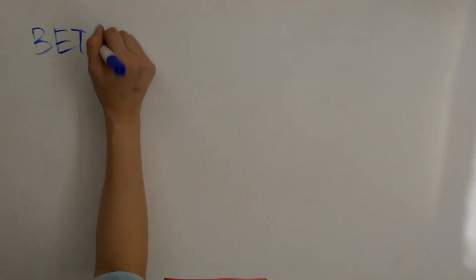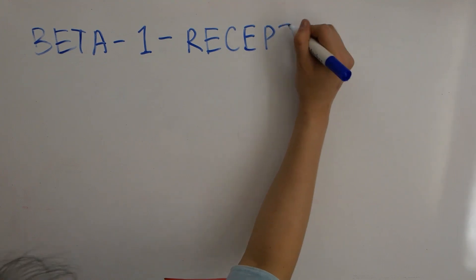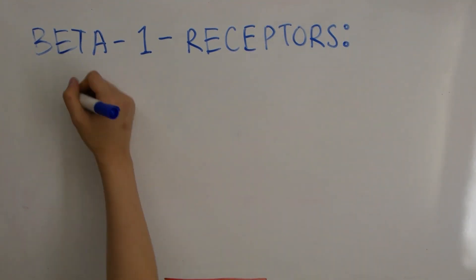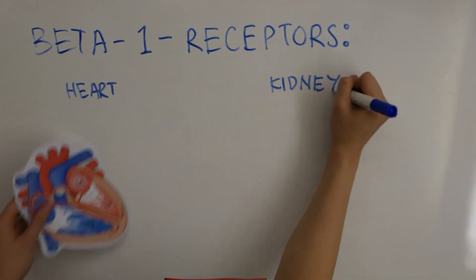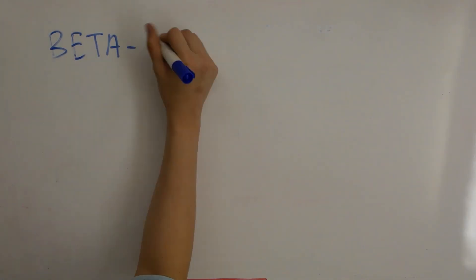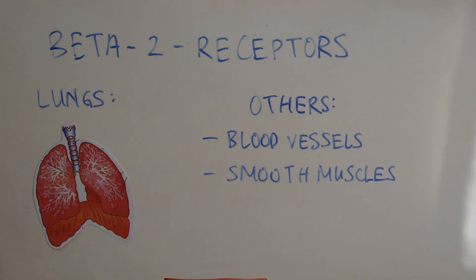acts on beta adrenoceptors by blocking sympathetic nerve stimulation caused by epinephrine, norepinephrine, and dopamine. There are two main types of beta receptors: beta 1 receptors are mainly in the heart and kidneys, and beta 2 receptors in the lungs, blood vessels, and smooth muscles of organs. Beta blockers can be selective or non-selective. Non-selective blockers work at both